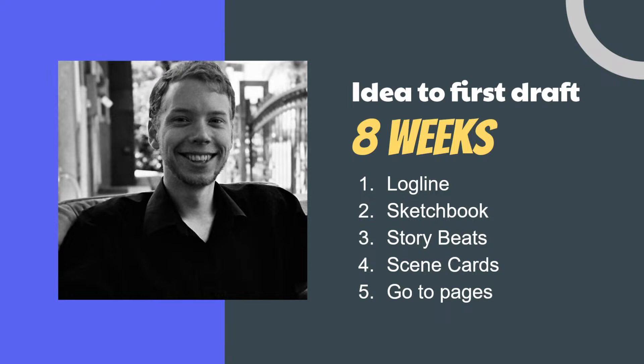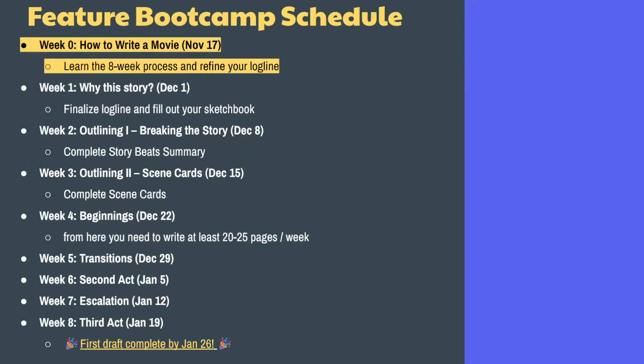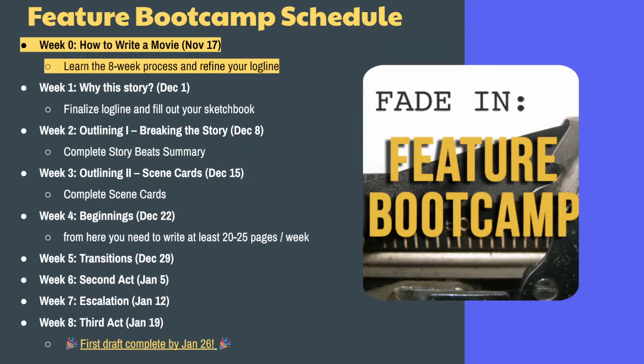We go from scene cards to pages. When we say 'go to pages,' that means we actually start writing, formatting scenes, writing dialogue — writing the actual script. That would be a good time to get Arc Studio, Writer Duet, or whatever screenwriting software you want to use. When we go to pages at week four, you'll be writing about 20 pages a week until the end of the class — January 26th — with extra time for holiday stuff. The idea is to try to write about four or five pages per weekday.